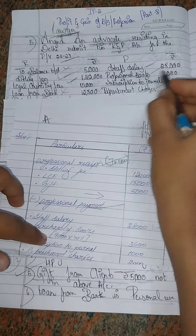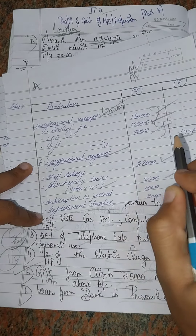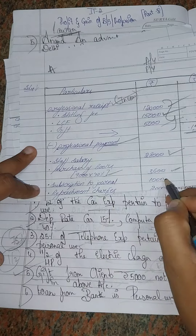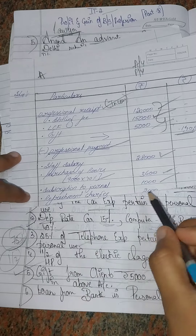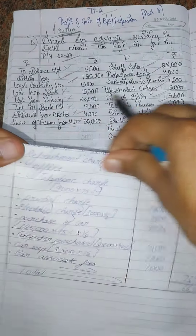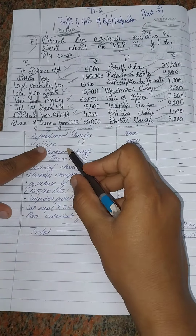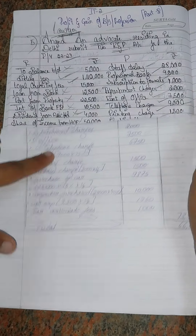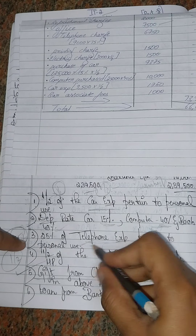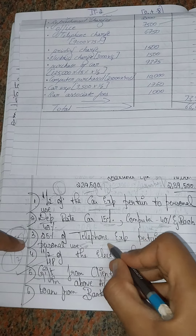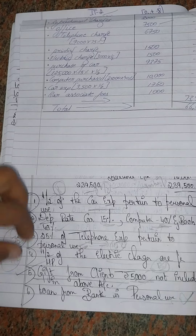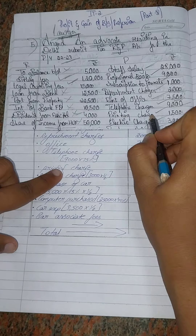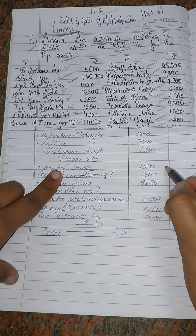Purchase of car is Rs. 9,000 into 40% depreciation equals Rs. 3,600, shown in the outer column. Subscription to journal is Rs. 4,000 with the adjustment bringing it to Rs. 1,000 in the direct column. Refreshment charges are Rs. 2,000 as they are, with no adjustment. Office rent is Rs. 7,500 as it is, with no adjustment. Telephone charges are Rs. 9,000 but with adjustment: 25% personal use, so 75% professional use, giving Rs. 6,750. Printing charges with adjustment come to Rs. 1,500 in the outer column.